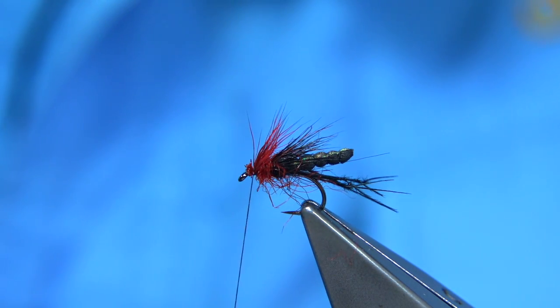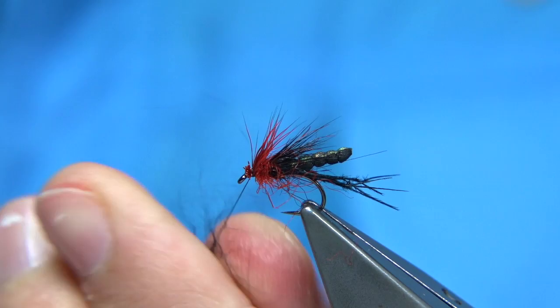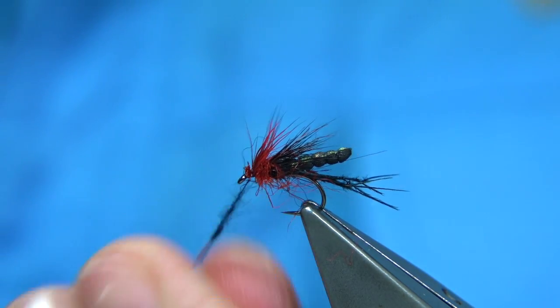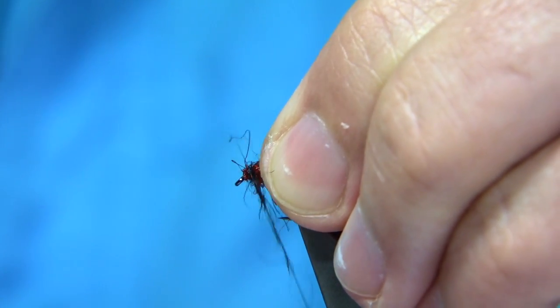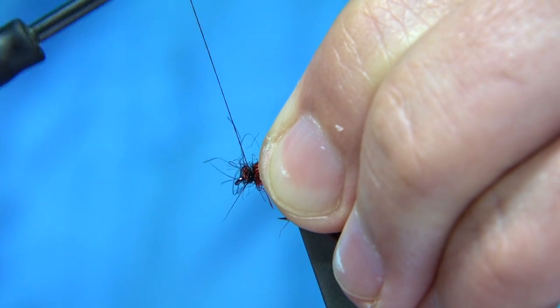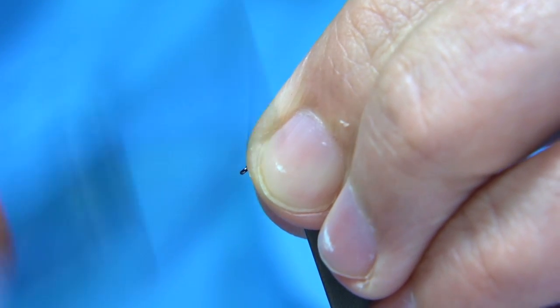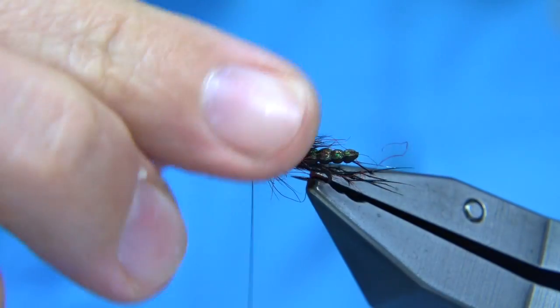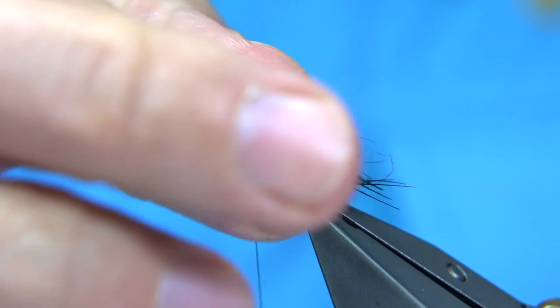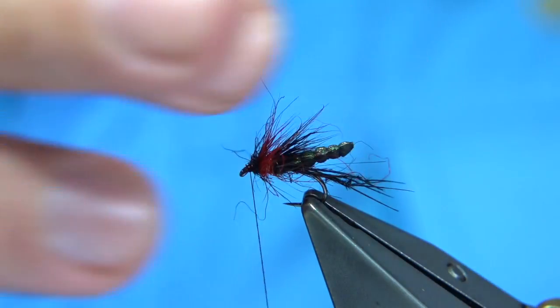Tiny bit of black seal's fur, not much. Quite loosely spun on. Then through, coming through the black with the thread, bring the thread to the front. Just tidy this up. See how it's looking. That's fine.